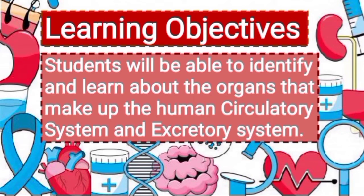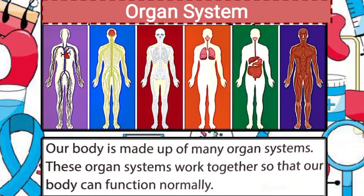This lesson will help you to identify and learn about the organs that make up the human circulatory system and excretory system. As you know, your heart, lungs and bones are just a few of the parts that make up your organ system. An organ system is a group of organs and body parts that work together to accomplish a common goal and to perform different functions in our body. Skeletal, muscular, nervous, respiratory, digestive, and circulatory are all examples of our different organ systems.